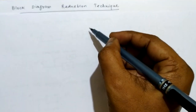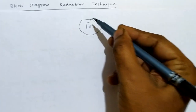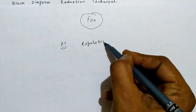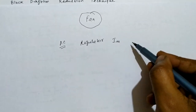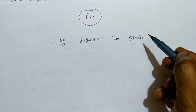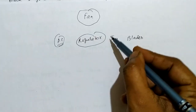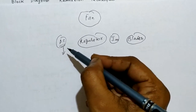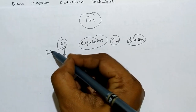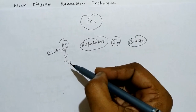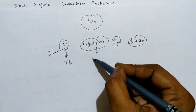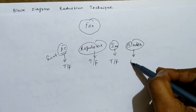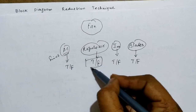Suppose we have an electric fan, which has many components: AC supply, then an electronic regulator, inside the fan we have an induction motor, and we have the blades. All the components are connected in some manner. The AC supply has its own transfer function — sinusoidal, sin(ωt). The electronic regulator is a power electronic converter having its own transfer function, and the induction motor also has a transfer function. The blades are a mechanical component also having a transfer function.